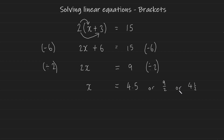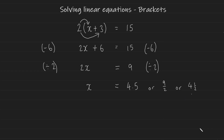You can write the answer as 4.5, or leave it as 9 over 2, or as the mixed number four and a half. In exams, if they don't specify a decimal, fraction, or mixed number, you should get marks for any of these forms unless the question has specified how it wants your answer.